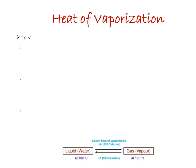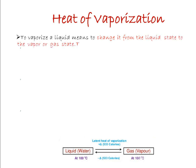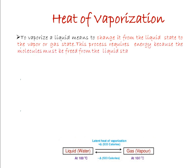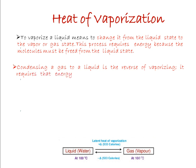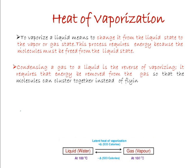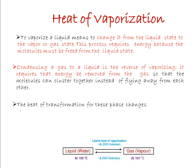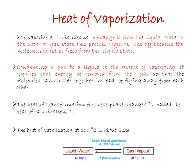Heat of vaporization: to vaporize a liquid means to change it from the liquid state to the vapor or gas state. This process requires energy because the molecules must be freed from the liquid state. Condensing a gas to a liquid is the reverse of vaporization; it requires that energy be removed from the gas so that the molecules can cluster together instead of flying away from each other. The heat of transformation for these phase changes is called the heat of vaporization, denoted LV.